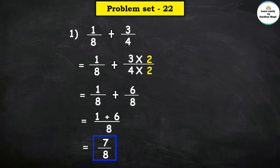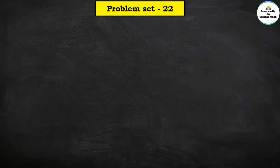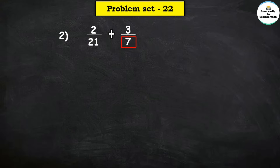So here our final answer is 7 upon 8. Next: 2 upon 21 plus 3 upon 7. Observe the denominators.